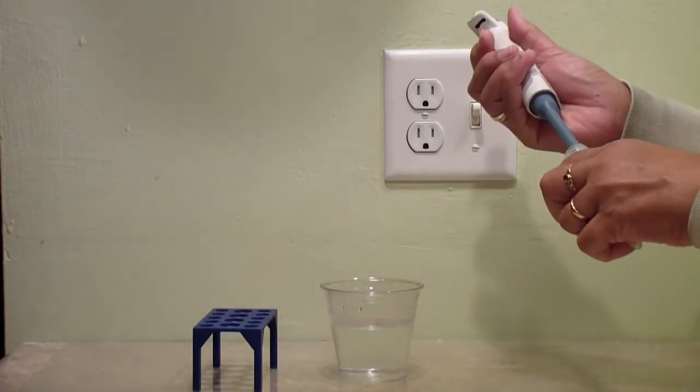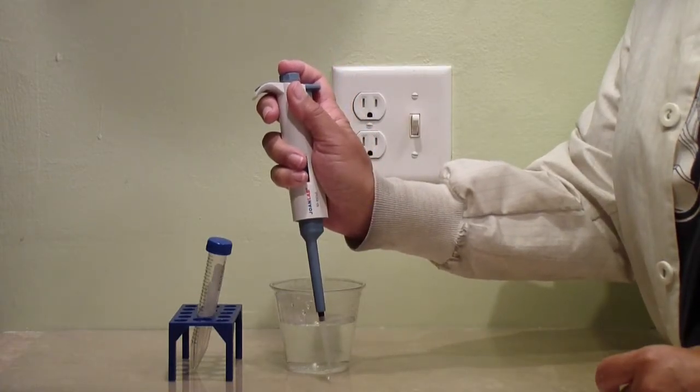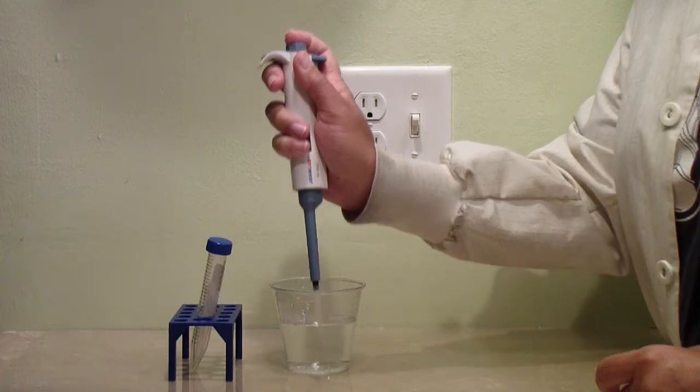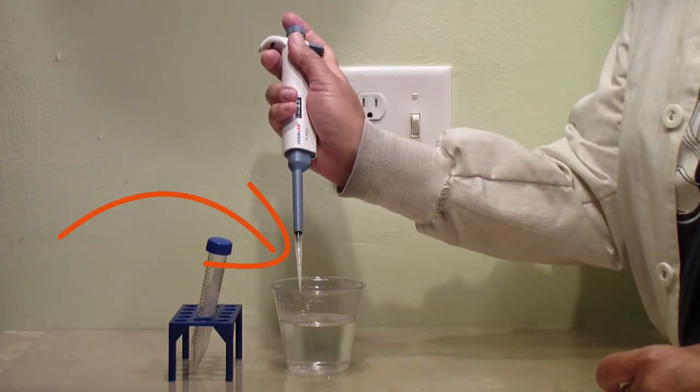Attach a tip, hold the pipette up in the air, press down on the plunger and hold it at the first stop. Then put the end of the tip in the water, guide the plunger upward and verify that there is water in the tip.